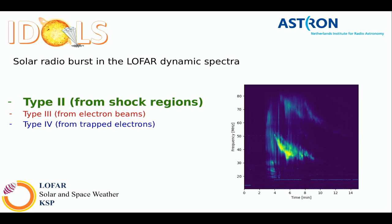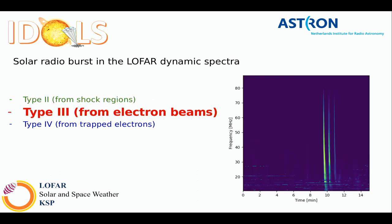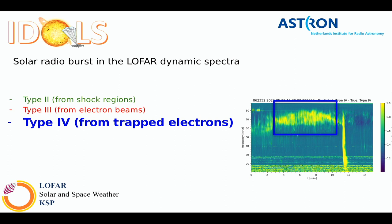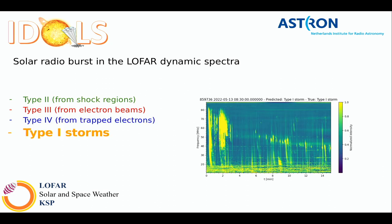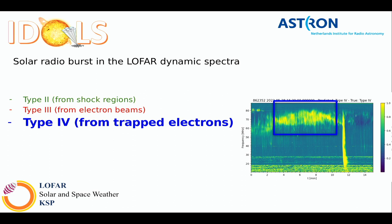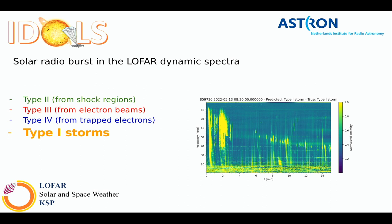Here in our sample a Type 2 shows its first and second order emission. A Type 3 appears as a very vertical line, and the horizontal features you see are RFI that couldn't be removed. Sometimes all burst types happen simultaneously: foreground emission from Type 3, a Type 4 happening in the background. We also have Type 1 storms that appear as episodic spikes that pollute the image.